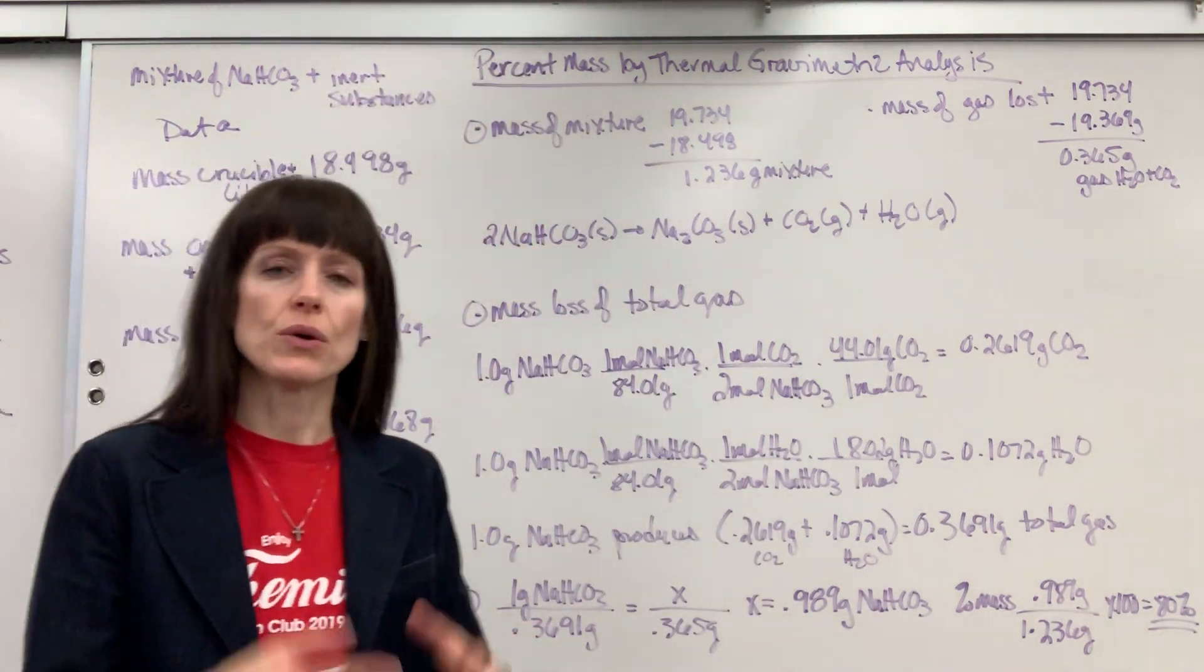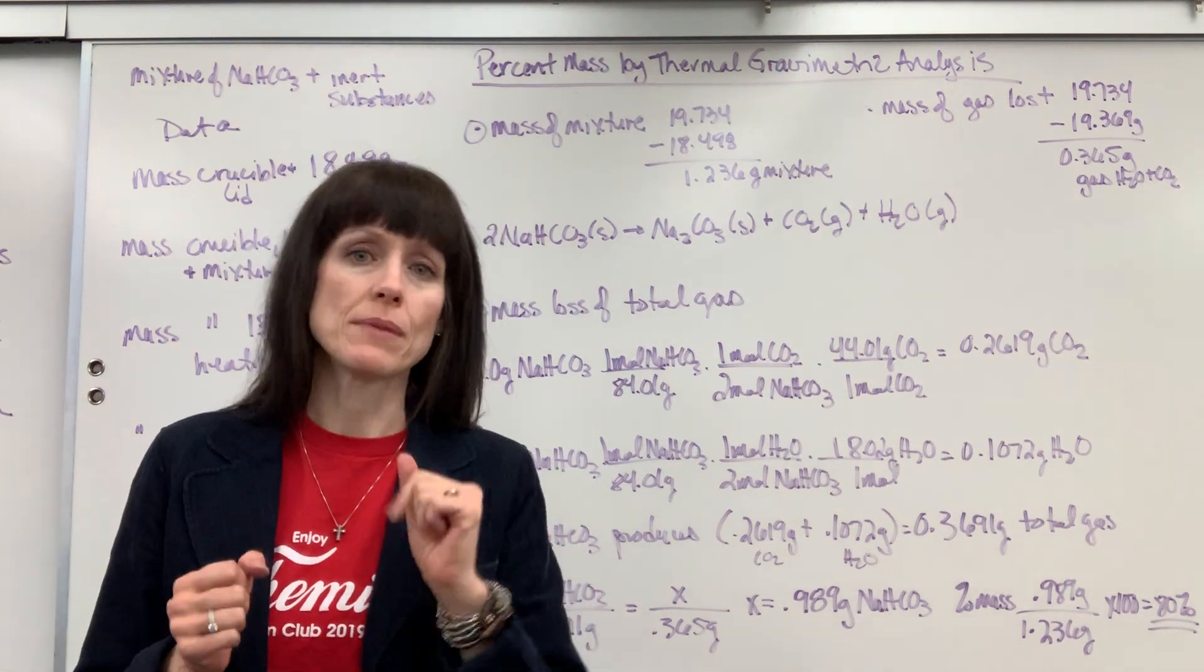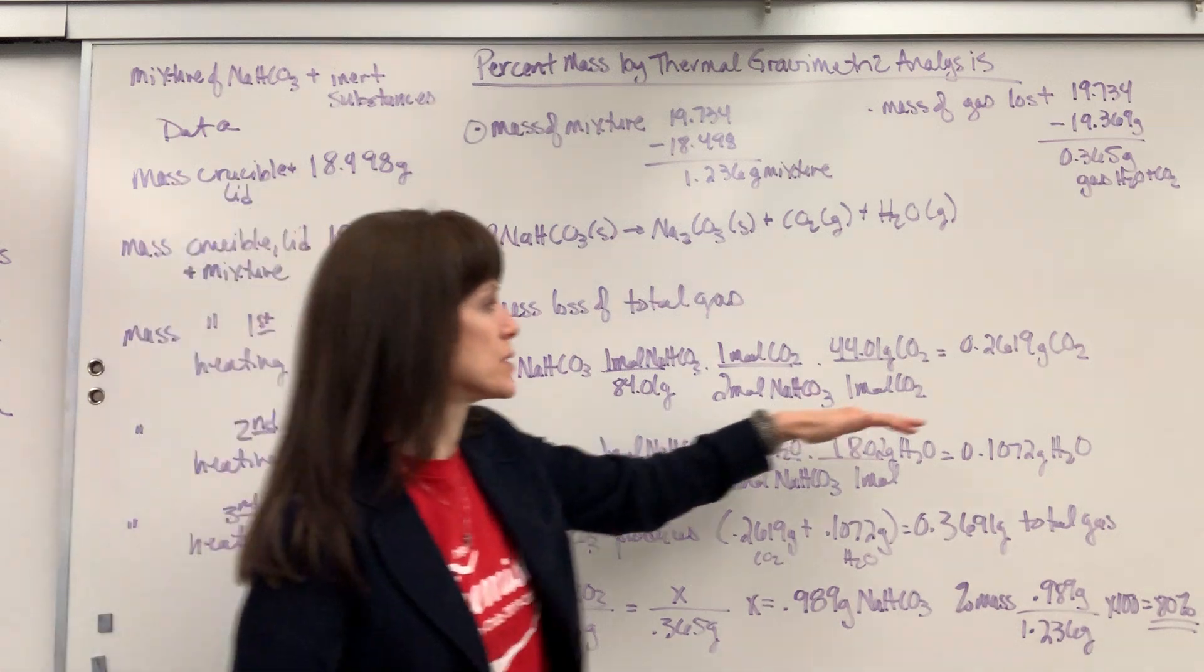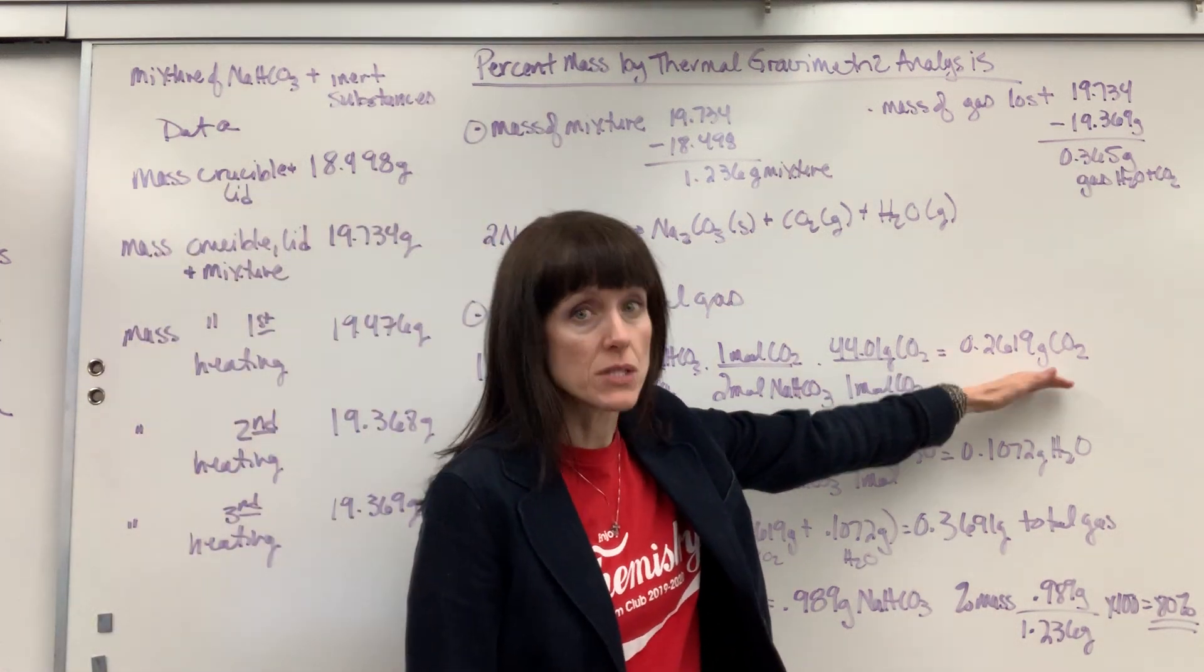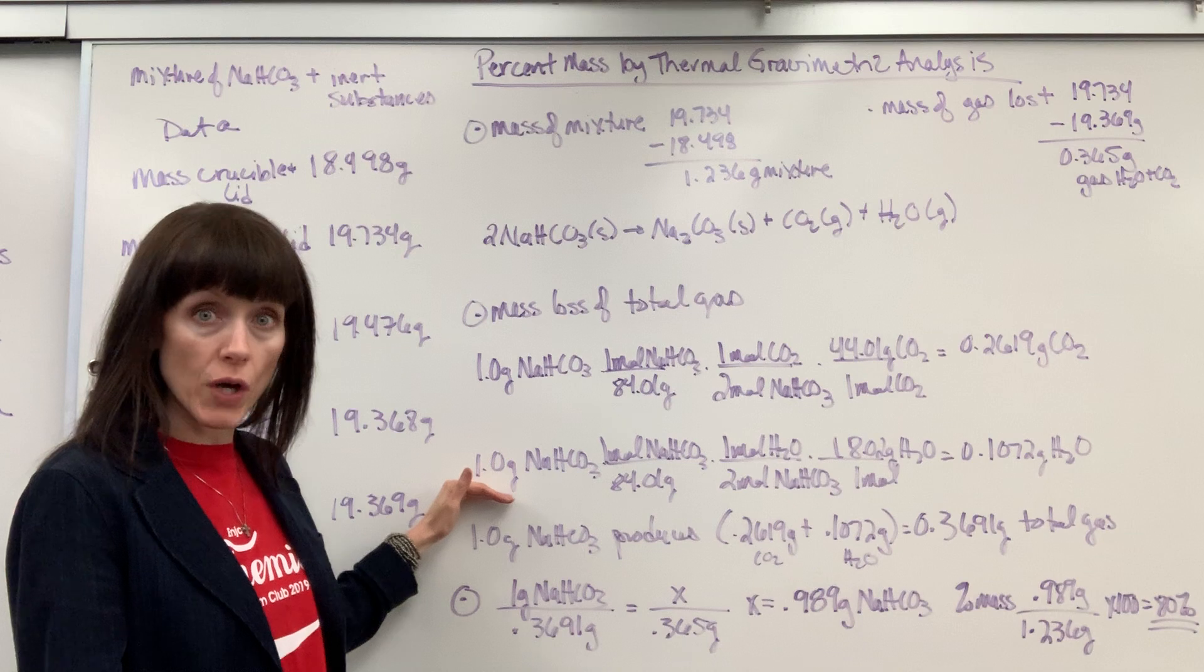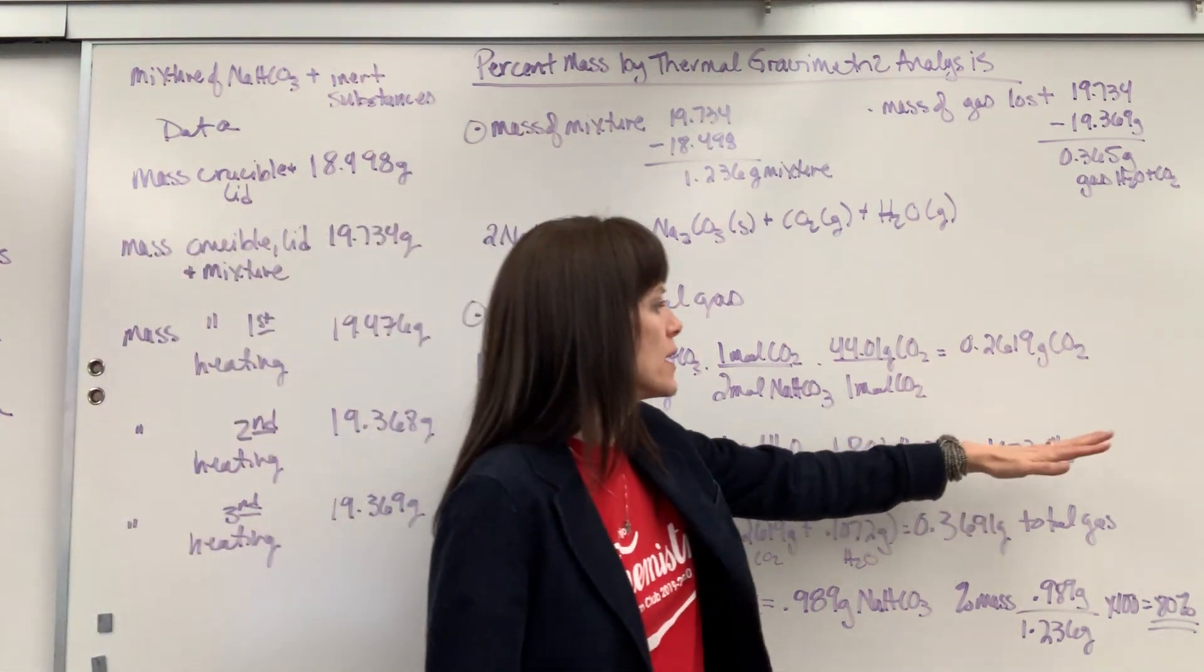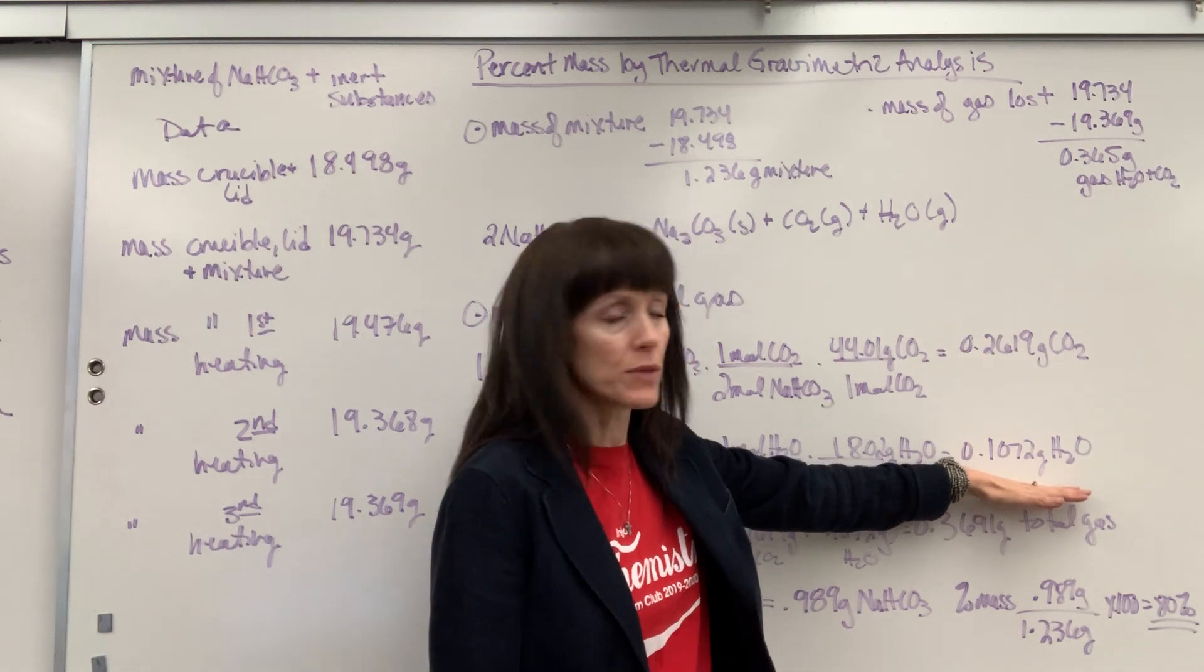First, we're going to assume that we have a 1 gram sample of sodium bicarbonate. And notice the stoichiometry. I'm going to determine the mass of the CO2, and then again take my 1 gram, assuming a 1 gram sample of sodium bicarbonate, find the mass of the water.